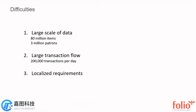Sixth, difficulties. There are three key problems we encountered in Shanghai Library. First, large scale of data — there are more than 80 million items and 3 million patrons currently, and it is still growing quickly. We need to keep the system fast for these numbers. Second, large transaction flow — there are almost 200,000 transactions every day, and we need to keep the system stable. Finally, localized requirements — there are lots of differences between the FOLIO community requirements and Shanghai Library's needs, so we have done lots of localization work.